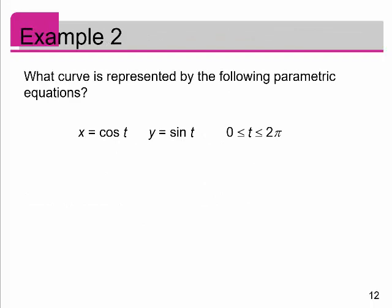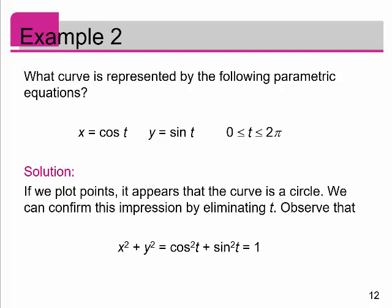Let's do one last quick example: what curve is represented by the parametric equations x equal to cosine of t and y equal to sine of t, from 0 to 2 pi — basically one rotation around the unit circle. If we plot points plugging in 0, pi over 2, pi, 3 pi over 2, and 2 pi, we notice we have a circle. We can confirm this by eliminating t using the trigonometric identity: cosine squared of t plus sine squared of t equals 1. Since cosine of t equals x and sine of t equals y, we get x squared plus y squared equals 1, which is a circle with center 0, 0 and radius 1.